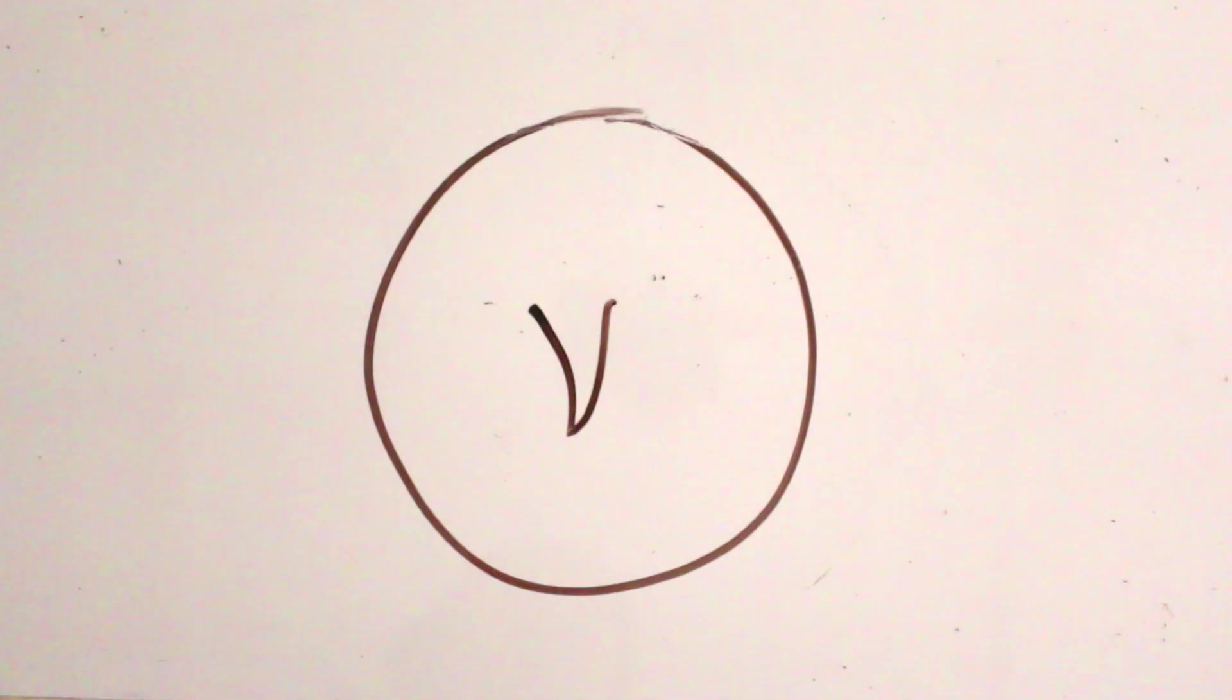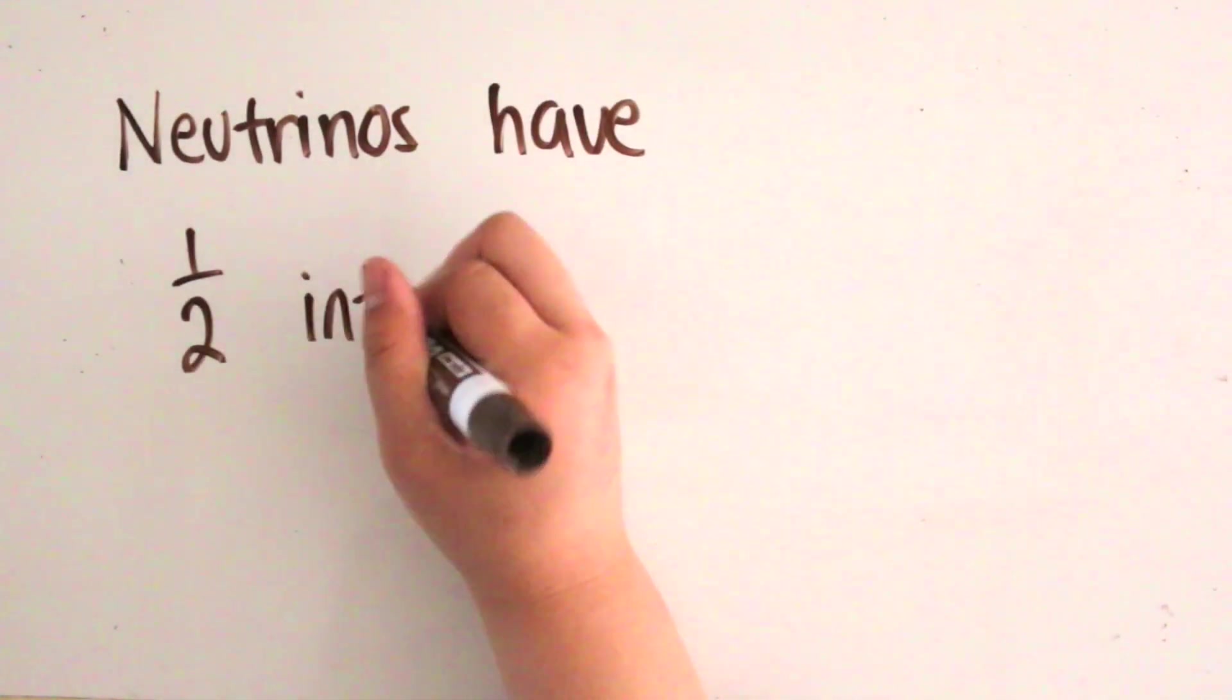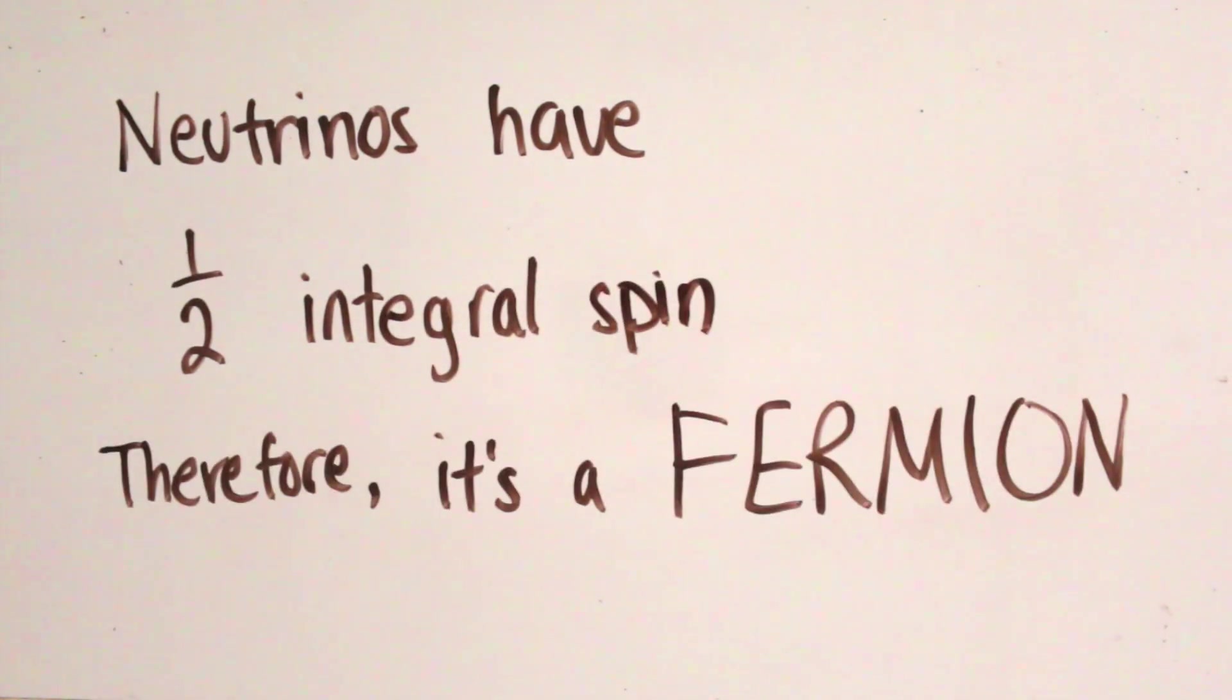They also have very, very, very small mass. Lastly, we know that they have half-integral spin, so they are classified as fermions in the standard model.